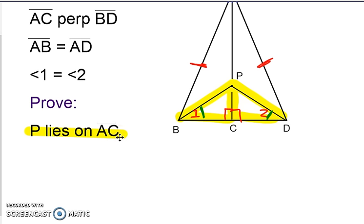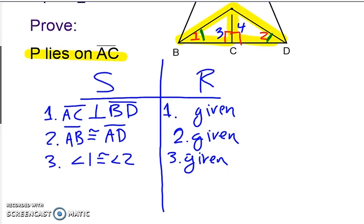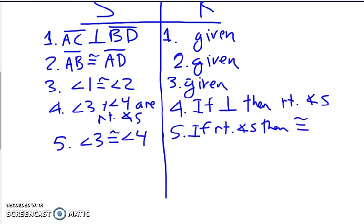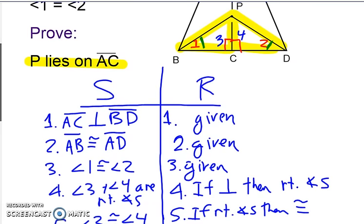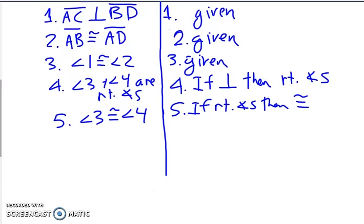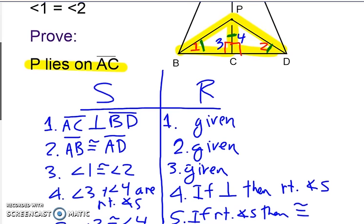Go ahead and write down the given information and then we'll get started. Let's take this perpendicular information and use it to say that these two angles are right angles. We want to show that they're congruent, but first we need to show that they're right angles. So angle 3 and angle 4 are right angles — reason: if perpendicular, then it forms right angles. Since they're both right angles, they're congruent. We also need to mark PC congruent to PC by the reflexive property. Now looking at our picture, we can prove those triangles congruent by angle-angle-side.